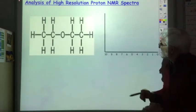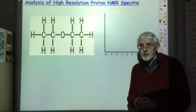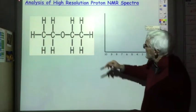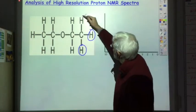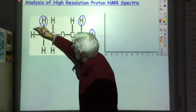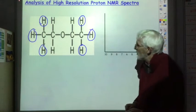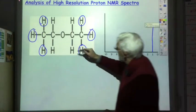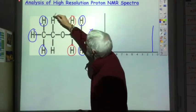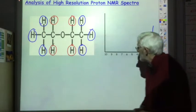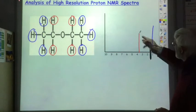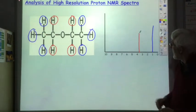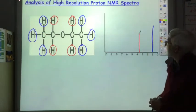Let's remind ourselves what the low-resolution proton NMR spectra of ethoxyethane looks like — this is what I looked at in the previous lecture. There are two environments of hydrogen atoms. These three hydrogens and these three hydrogens are all in the same environment, giving rise to a peak at around one. Then these four hydrogens are in the second environment and give rise to a peak around three and a half — a slightly smaller peak because there are only four hydrogens as opposed to six.